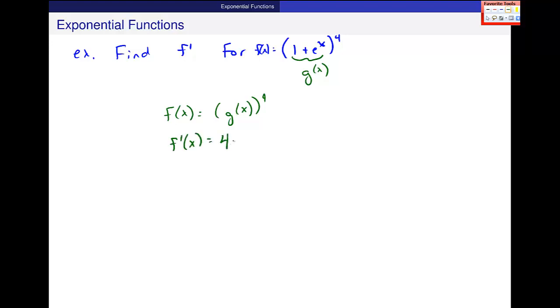And really f of x has this form where I have g of x to the fourth. And I know the derivative of that should be, I bring this 4 out front, I leave the inside alone. Subtract 1 from the exponent, and then I have to multiply by g prime of x.